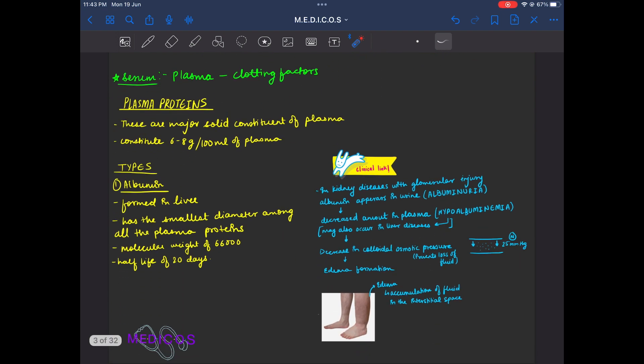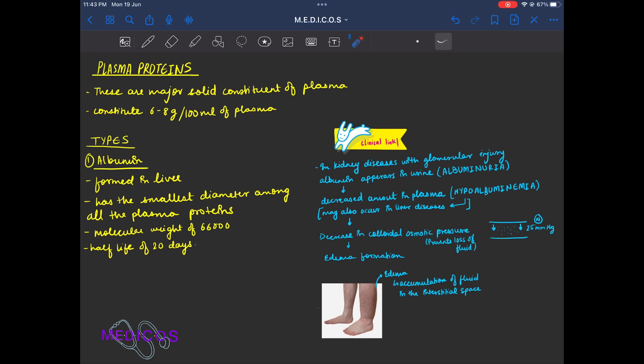In albumin, it is formed in liver. It has the smallest diameter and the lowest molecular weight. Weight's value is not necessary. It is just important that the weight is the lowest. Half-life is 20 days.